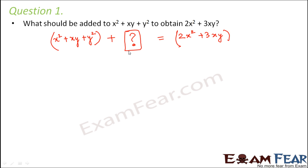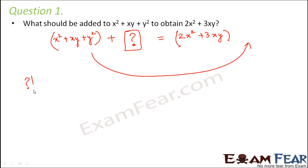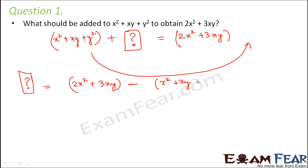In order to find out this expression, we move this entire algebraic expression to the other side. We know that whenever we transpose a value — whether a constant or a variable — from one side to another, the sign changes. So the question mark is going to be equal to 2x squared plus 3xy minus x squared plus xy plus y squared, because the transposed term carries a negative sign.